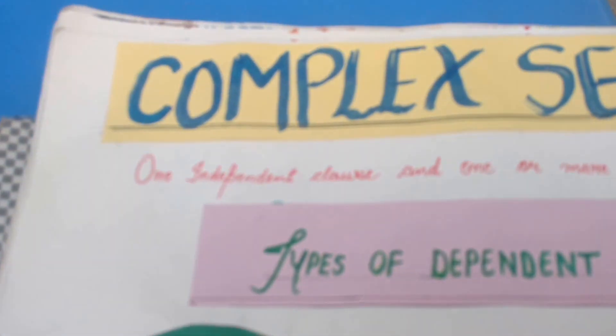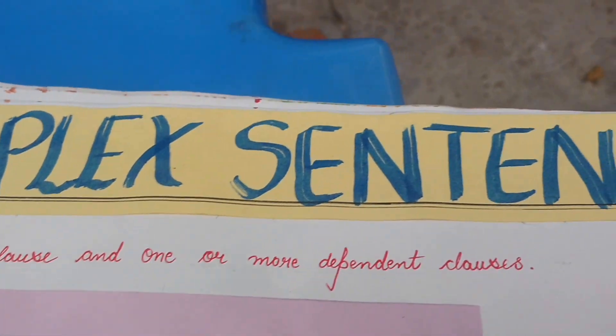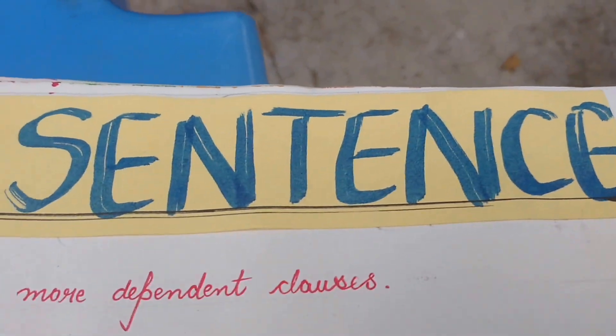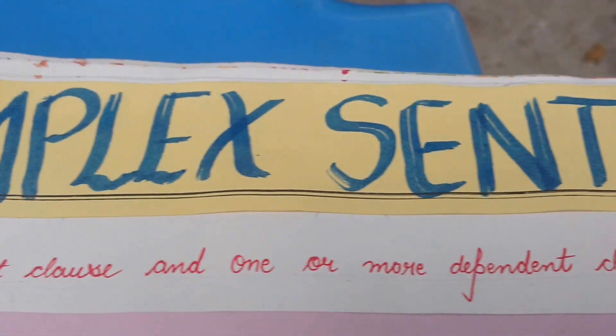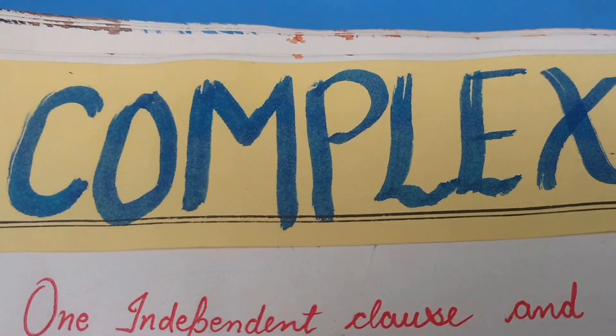Hi friends, I will tell you about the complex sentence. What is a complex sentence? The complex sentence contains one independent clause and one or more dependent clauses, or we can say relative clauses.